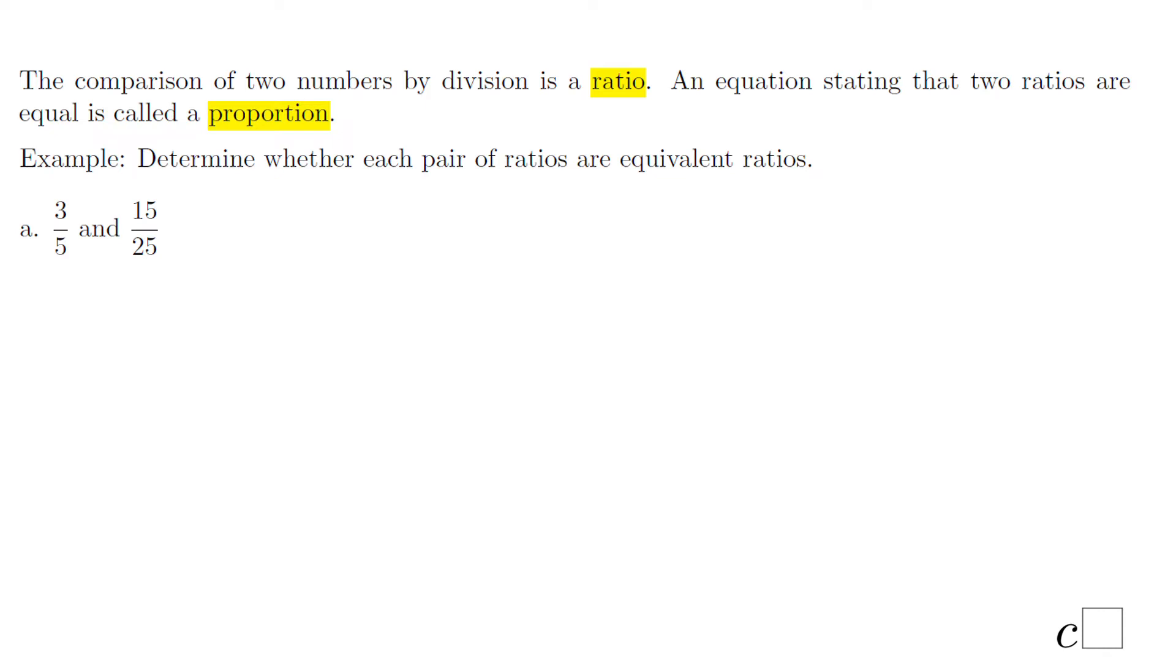A ratio can be written like a quotient, 3 over 5 and 15 over 25. One way to see if two ratios are equivalent is to use a calculator and divide, or to simplify. Now 3 over 5 is in the simplest form, nothing can be done, so it stays as it is.